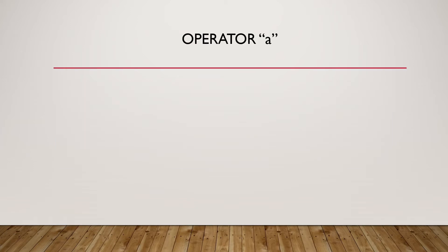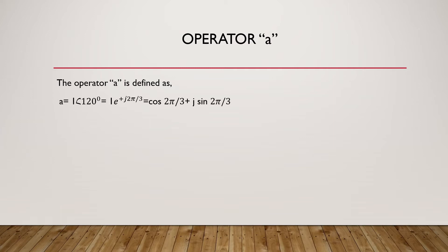Now we are talking about operator A, which is very important in this analysis. Operator A is defined mathematically as 1 at an angle of 120 degrees. It can also be expressed in exponential form as e^(j·2π/3), or in terms of cos and sin as cos(2π/3) + j·sin(2π/3), giving the value −0.5 + j·0.866.